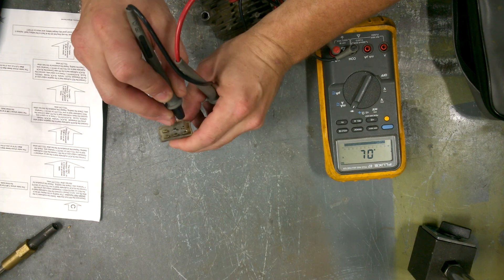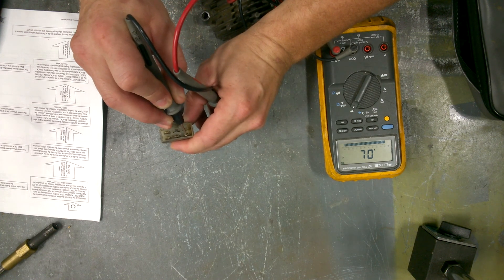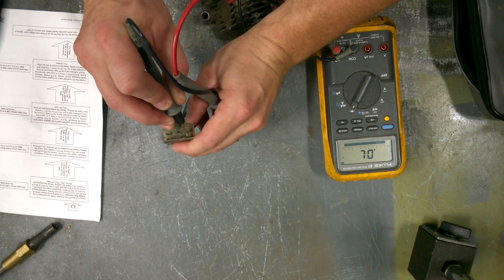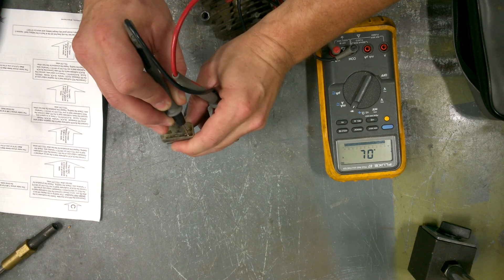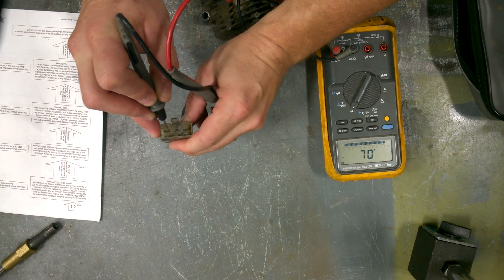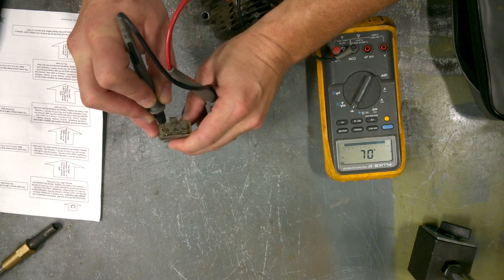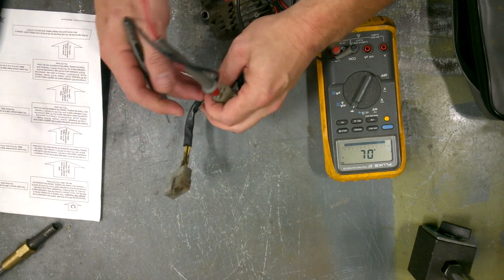And so we want to check each of the yellow leads. And depending on what type of motorcycle you have, there'll be different colors. But it should be three wires of the same color. And all of those, we've got nothing. So no flow in that direction.